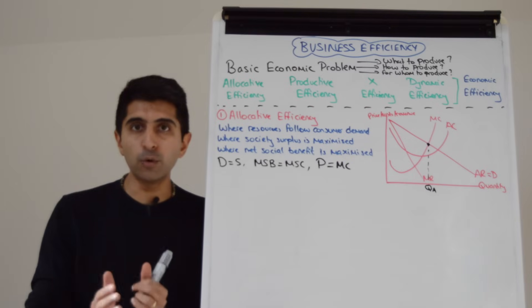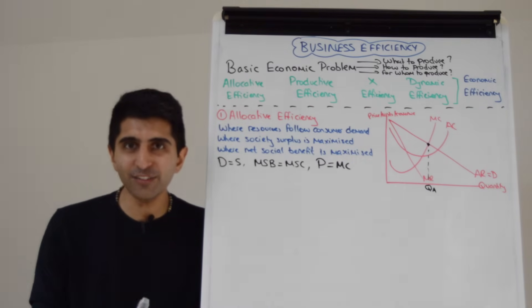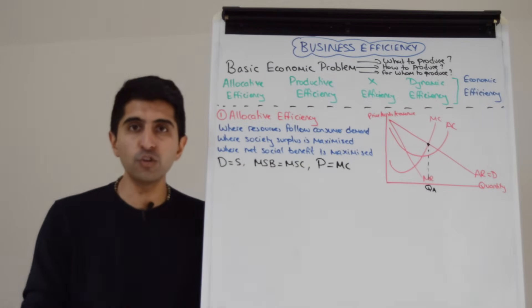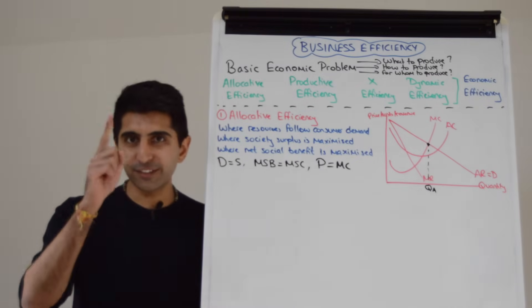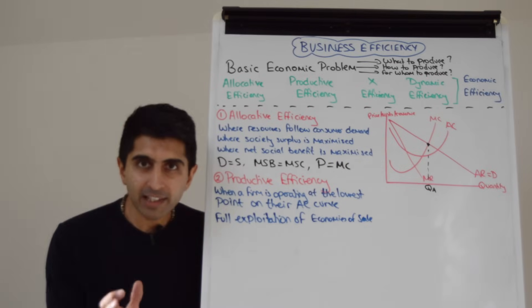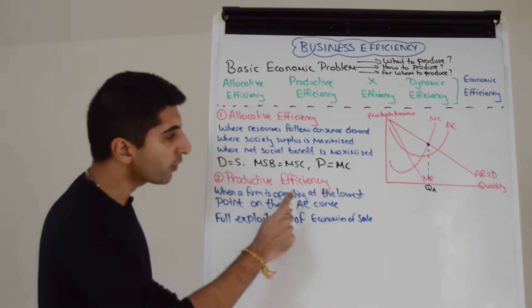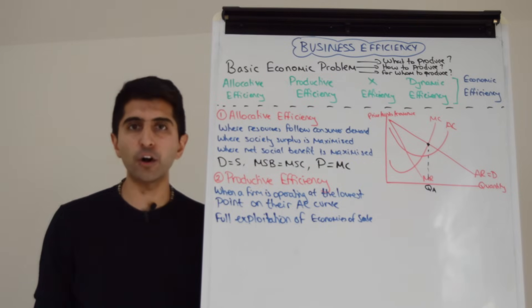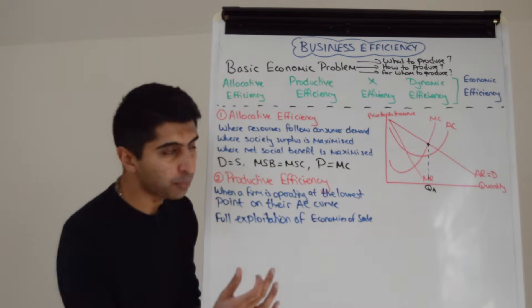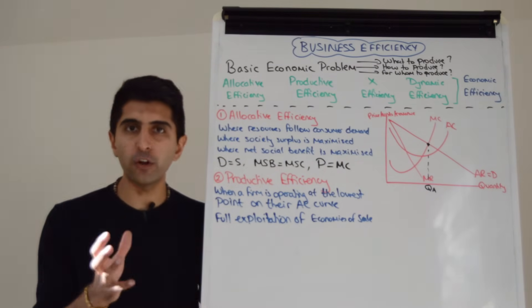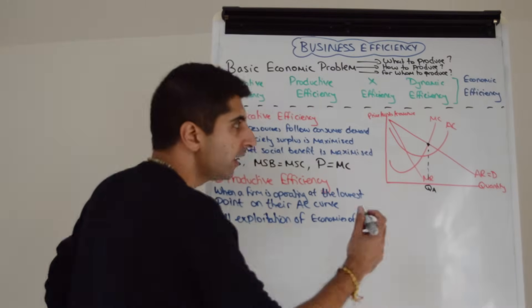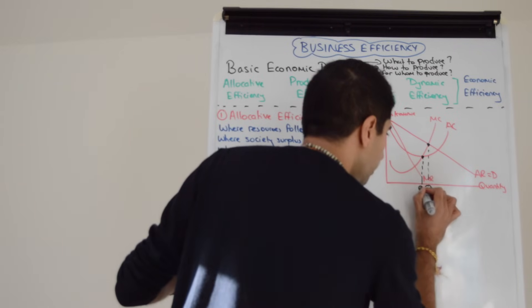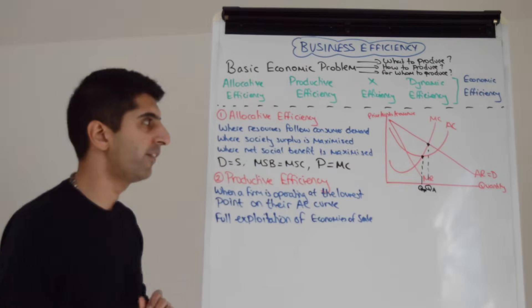Make sure you watch all the other efficiencies and then the next video in this playlist, where I go into lots of detail about what that means for consumers and producers. Now let's look at productive efficiency. Productive efficiency occurs when a firm is operating at the lowest point of their average cost curve — they are minimizing their costs by fully exploiting all potential economies of scale. On a diagram, that's the minimum point of their average cost curve. Let's call that quantity QP — P for productive efficiency.